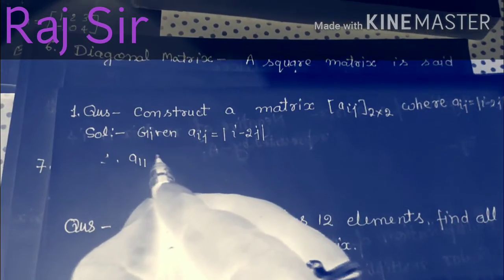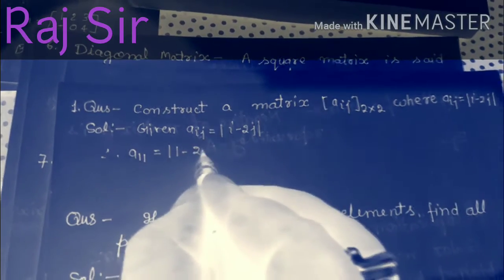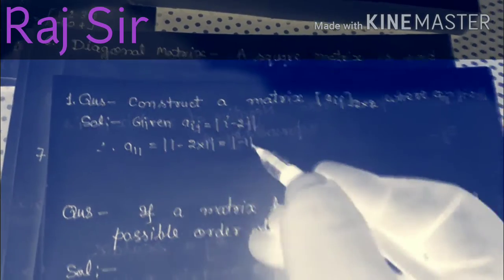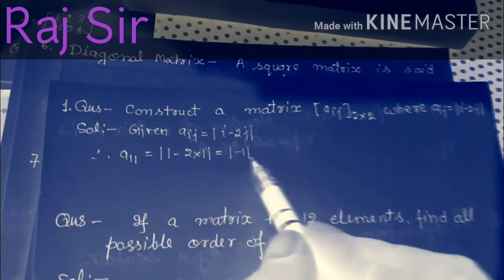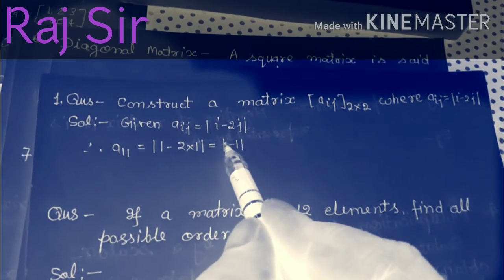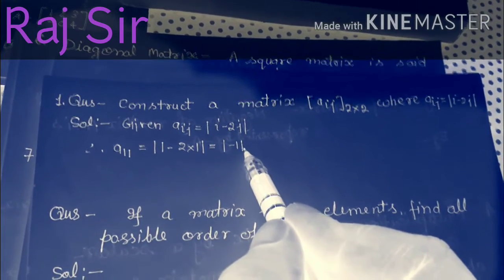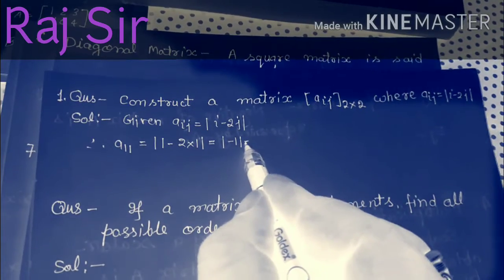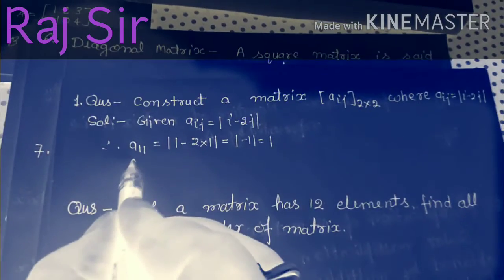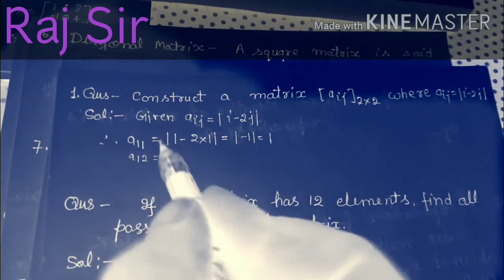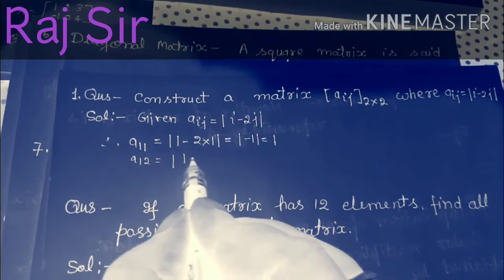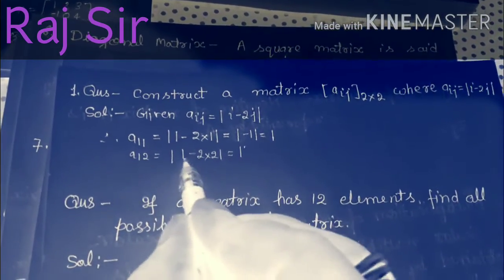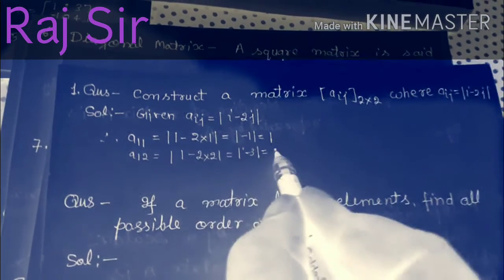Therefore, A11 equal to mod 1 minus 2 into 1, equal to mod minus 1. Students, you know that the value of mod is always positive. Therefore, mod minus 1 can be written as equal to 1. A12 equal to mod 1 minus 2 into 2, equal to mod 1 minus 4, equal to mod minus 3, which is also equal to 3.